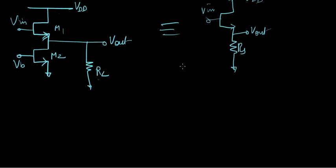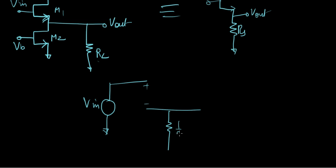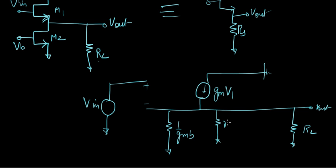Let's go ahead and derive the gain. First we draw the small signal model — I'm going to draw it first and then explain how we get there. This is Vin, and most of it is pretty intuitive. This is 1/gmb and this is gm·v1. In this example and a few more to come, we're going to be considering channel length modulation. Here's Vout, here's RL, and we're going to have ro1 and ro2 — the resistances coming from the consideration of channel length modulation.